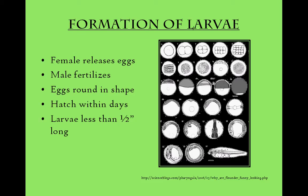Throughout the metamorphosis process, the body of the larvae, which looks similar to other bilaterally symmetric fish, begins to change. These changes, among others, are driven primarily by thyroid hormone.